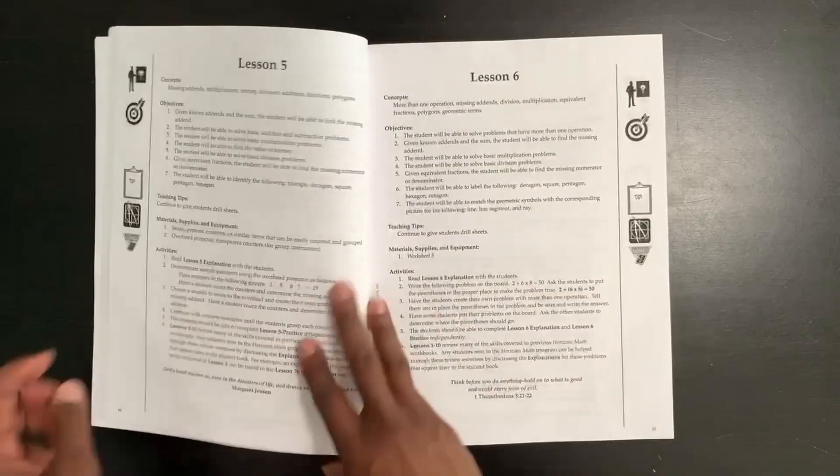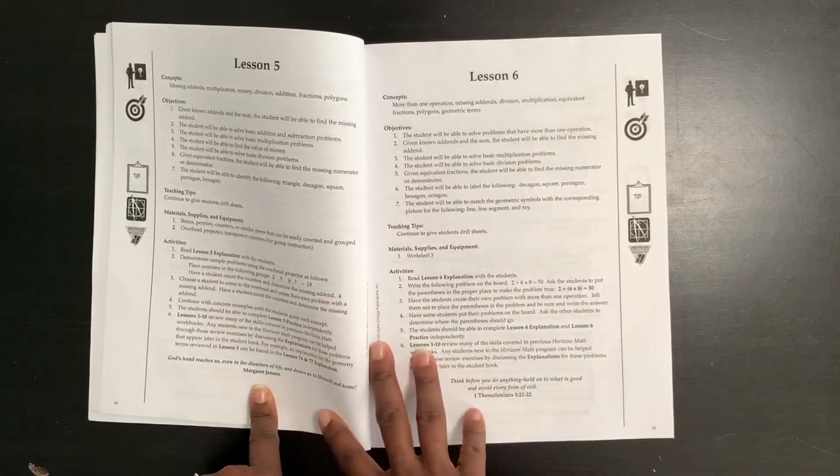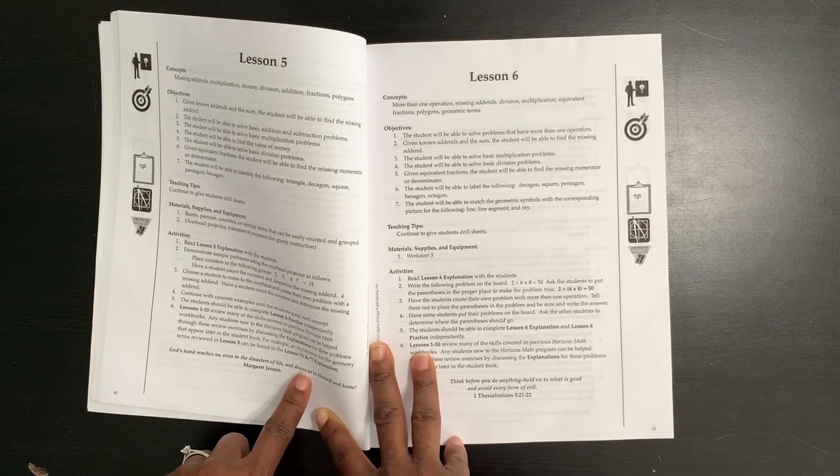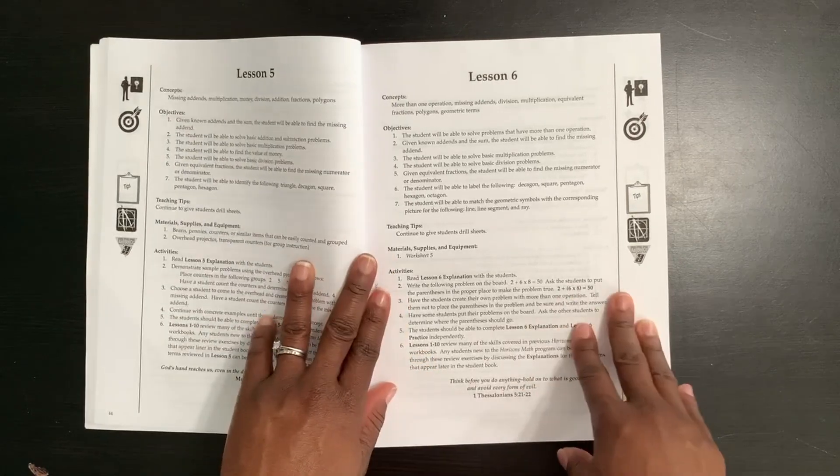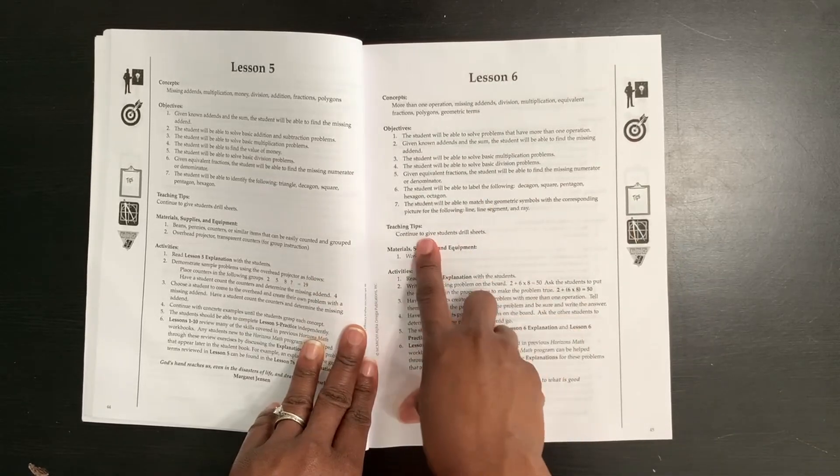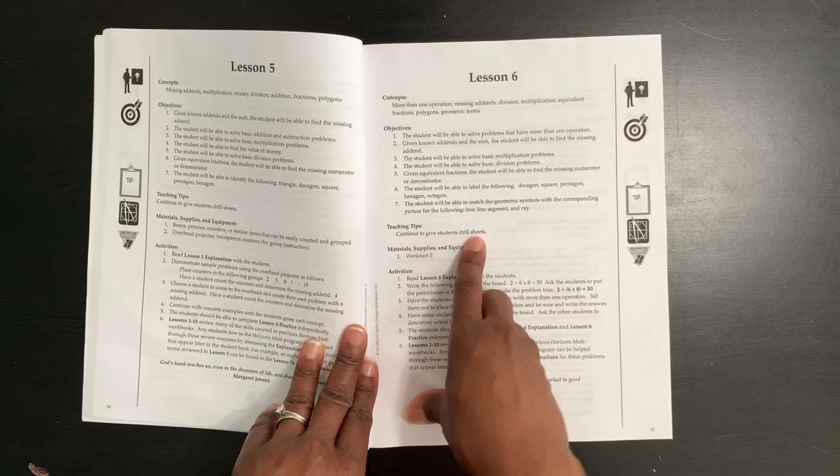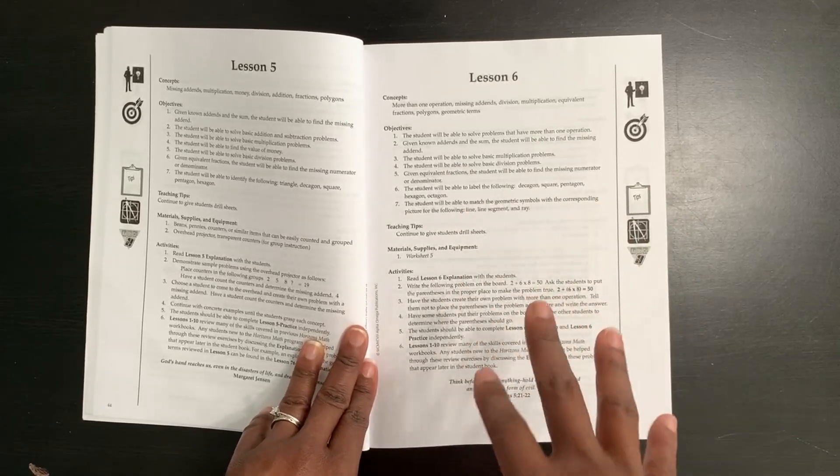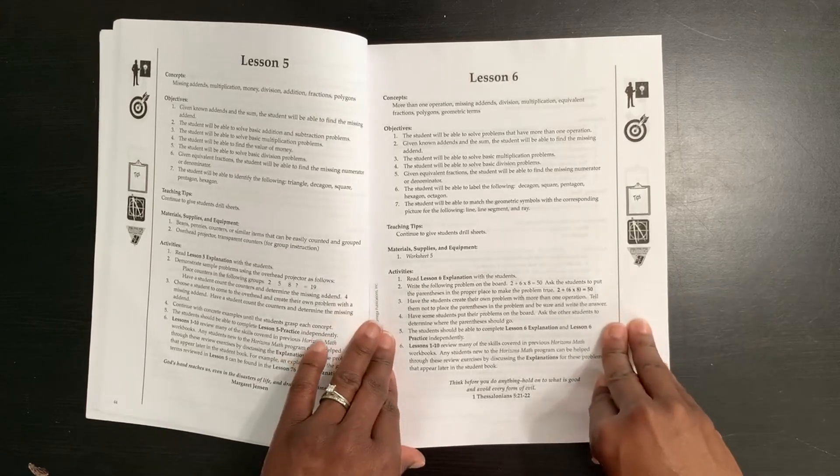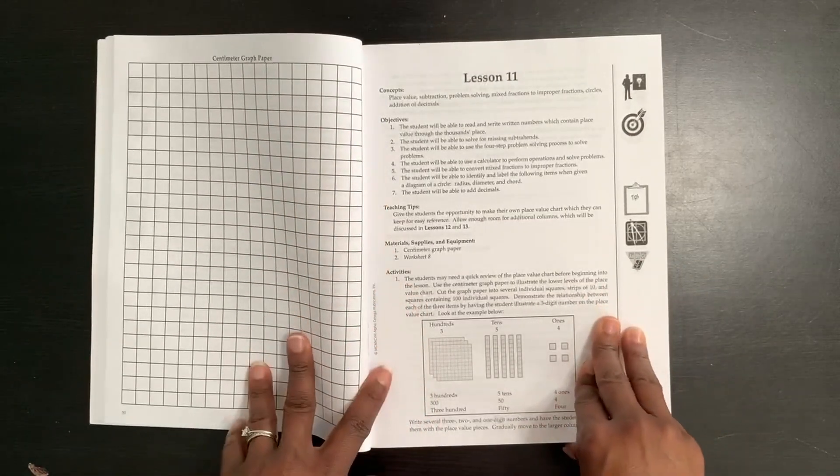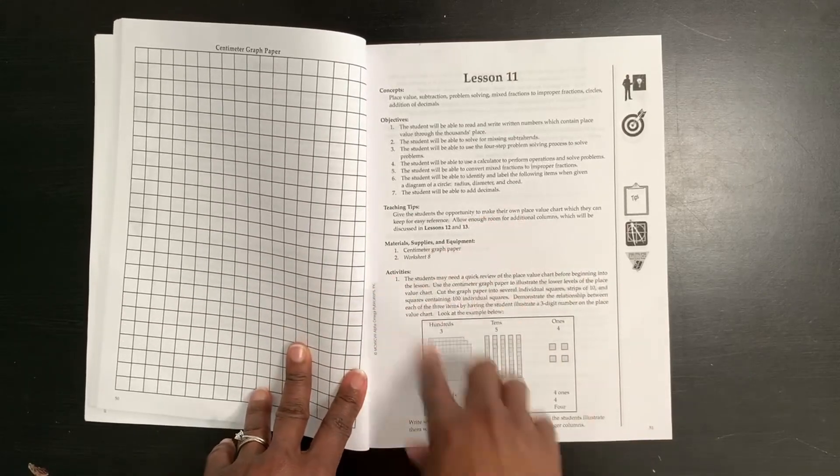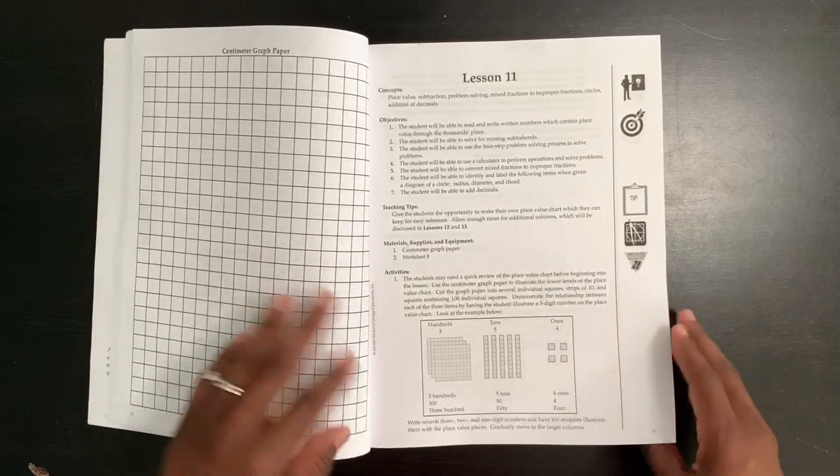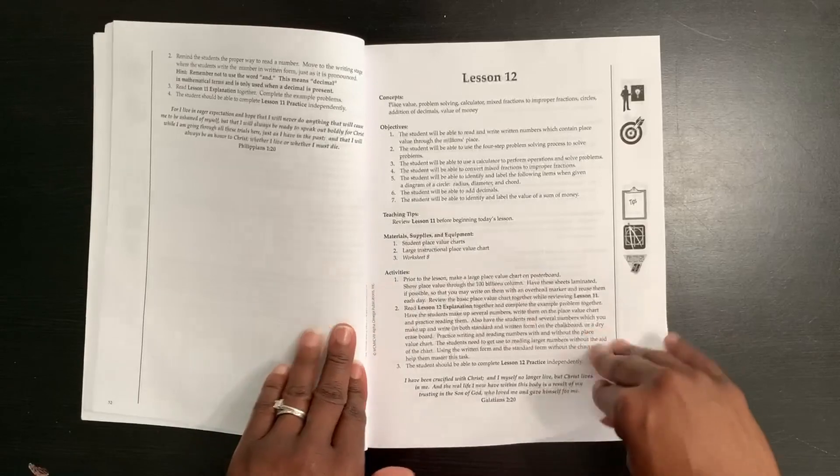So now moving on. That is how they are all set up. This one actually has a title, a person who did it, Margaret Jensen. God's hand reaches us even in the disaster of life and draws us to himself and home. There we have it. Each lesson is set up the same way. Teaching tips continue to give students drill sheets. So you're working on it. There are no math fact sheets within this curriculum. So we will have to find those somewhere else, which is an easy thing to find guys. You can totally do that. Going all through. Then we have graph paper here, different activities where they will use things. They need centimeter graph paper and worksheet number eight. Here's centimeter graph paper. They actually provided that for you. And then worksheet number eight. That is how each of the lessons is set up.